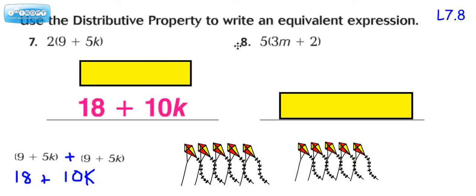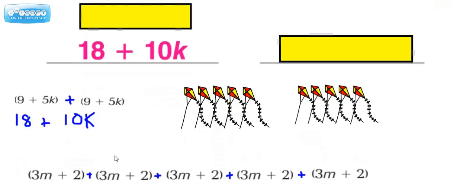Now let's rethink number 8, which is 5 times 3m plus 2. If we write it out as its separate factors, it might look like this — because we have 3m plus 2 written out 1, 2, 3, 4, 5 times.